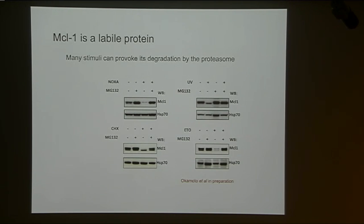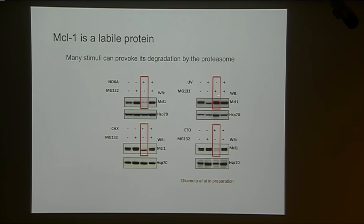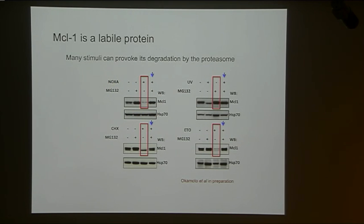If you use DNA-damaging agents like etoposide, you get marked degradation of MCL1. In cells that are UV-irradiated, amounts of MCL1 also get markedly reduced, and in most cases that can be blocked by proteasome inhibitors such as MG132. Simon Willis, when he was a PhD student with Jerry and myself, also observed that NOXA, the BH3-only protein, is very atypical — not only did it bind to MCL1, but he was also able to show it could provoke MCL1 degradation.